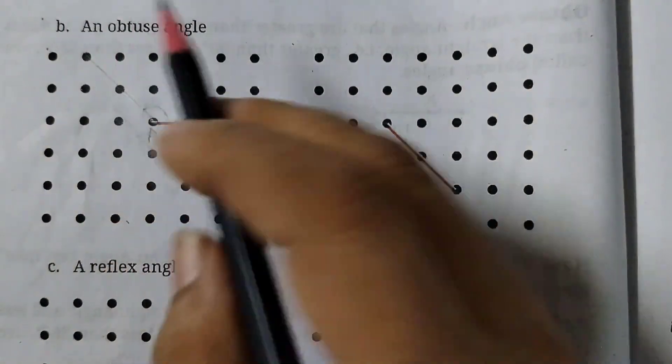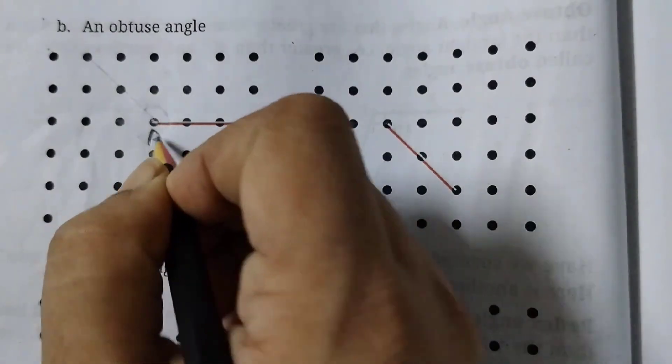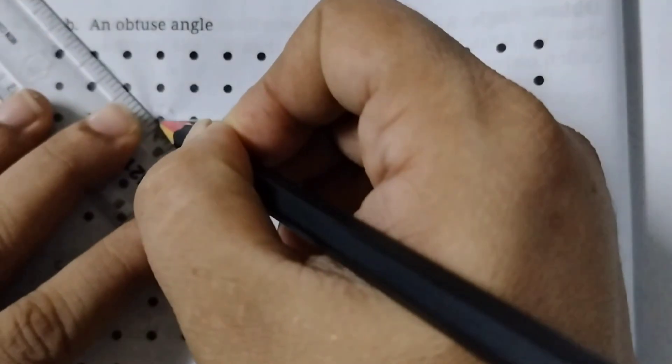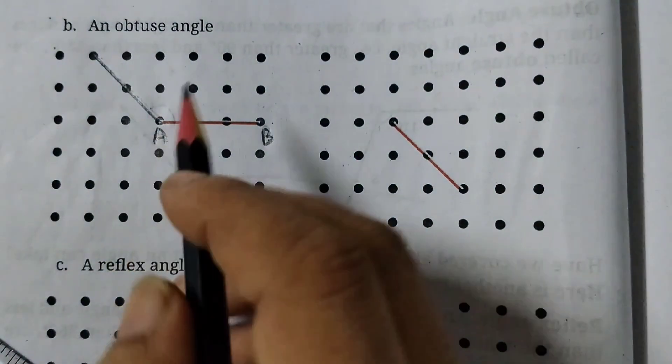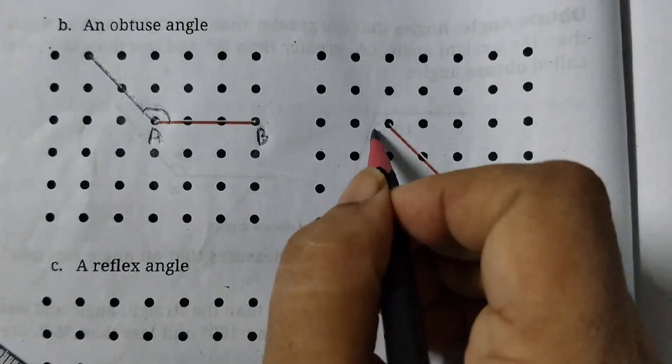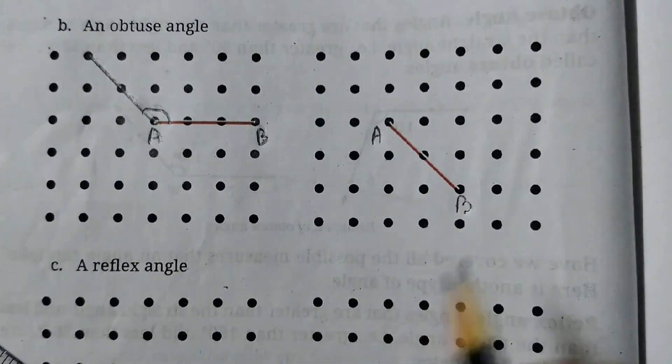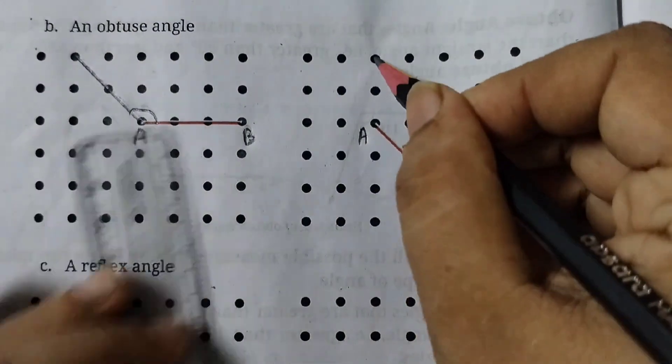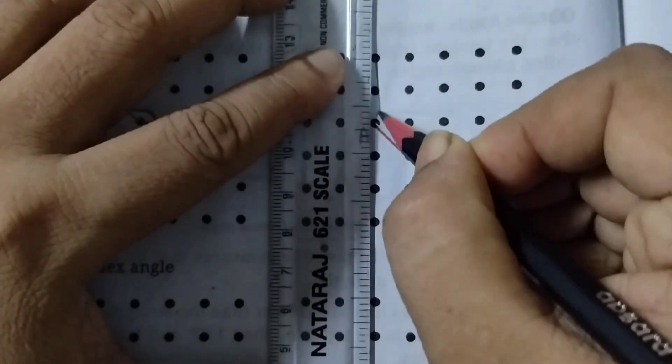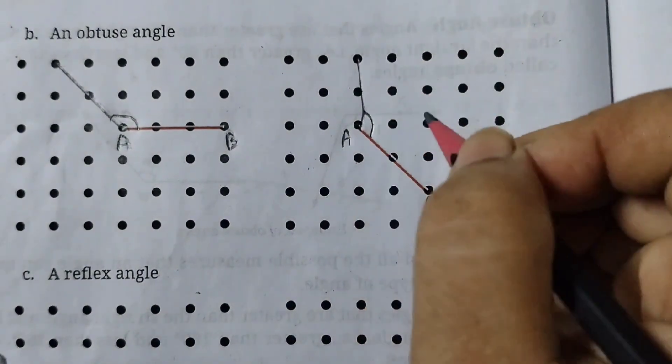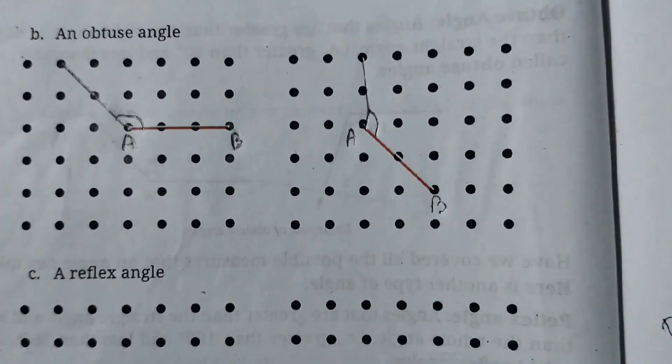Next we have to draw an obtuse angle. So let's label this as A, this is B. Labeling is important because we have to join point A. Obtuse is more than 90, so we can do it like this and then draw a curve to show obtuse angle. Here this is A, this is B, and obtuse - if I do like this this would be a right angle. So I will take these three points. This is your obtuse angle. Draw a straight line.